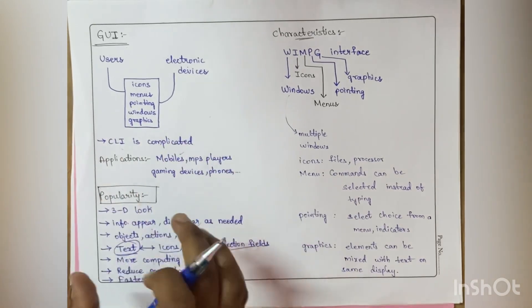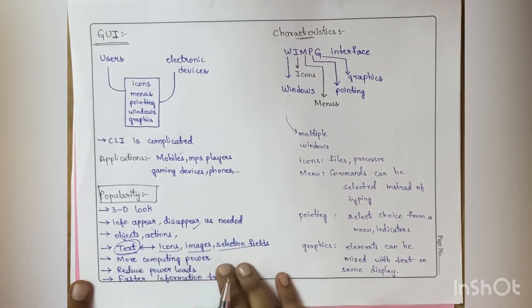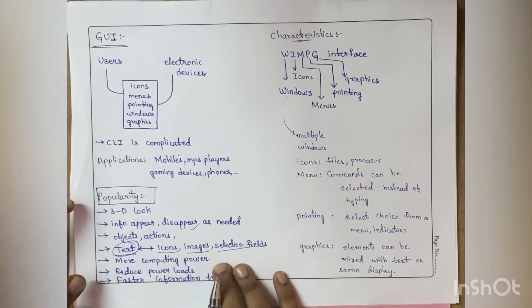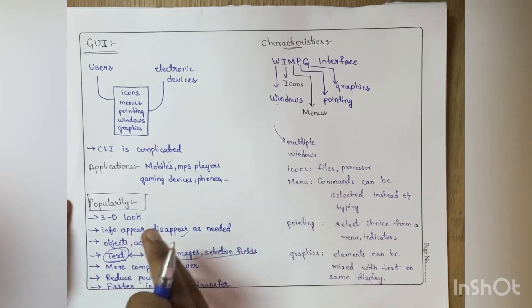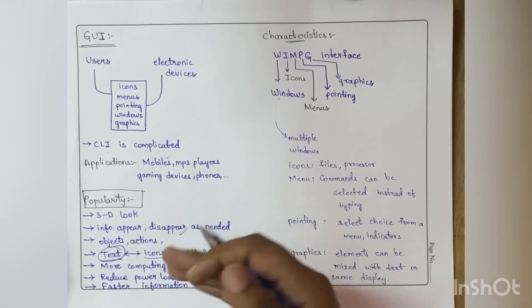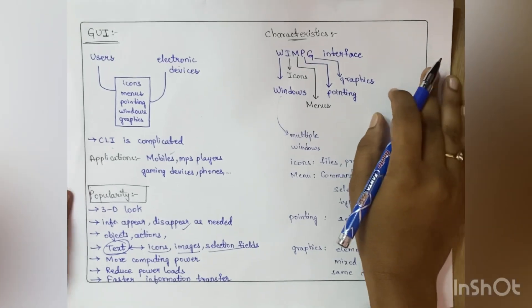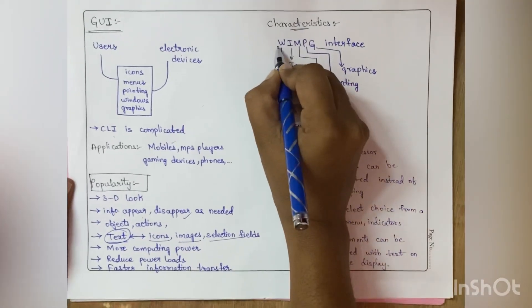This is the popularity of GUI and there are many things in the list of this popularity. I've mentioned a few things here like three-dimensional look, information appearing and disappearing. You can also learn many other points from Google. Coming to characteristics, if you remember this WIMPG interface thing, you can write all the five characteristics.